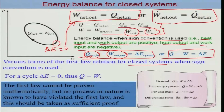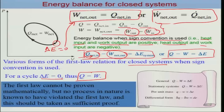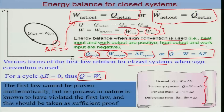For a cyclic process, delta E should be zero, so net heat in equals net work out. From the perspective of the first law, heat and work are not distinguishable — both relate to energy transfer in dynamical form. This distinction becomes more relevant when we discuss the second law, where we will realize the importance of distinguishing different types of energy transfer in the form of heat and work.